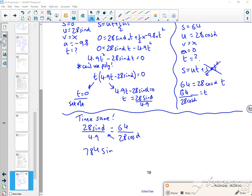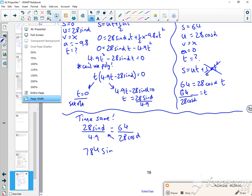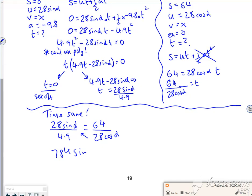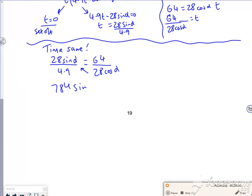So if I take it up, 28 squared is 784. I've got sine alpha, cos alpha, and then if I take the 4.9 up there, that's going to give me 313.6.